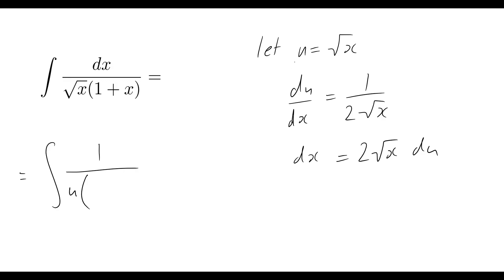So that would be u squared. So 1 plus u squared. And now multiplying that by dx. But we know that dx is equal to 2 times the square root of x du. And again, square root of x is u. So I'm going to go ahead and put that in there like that.